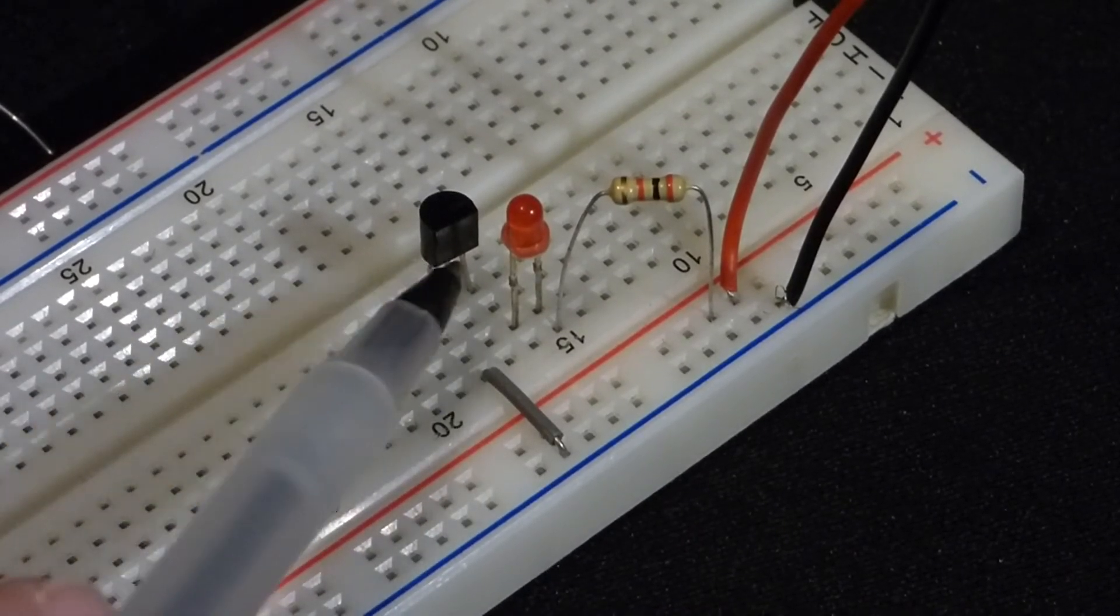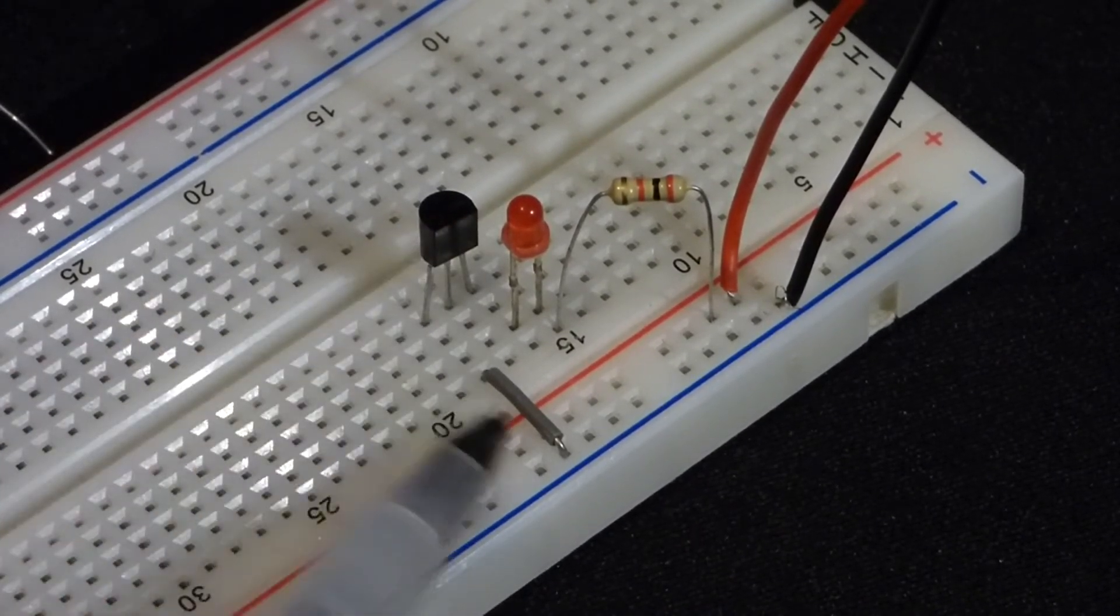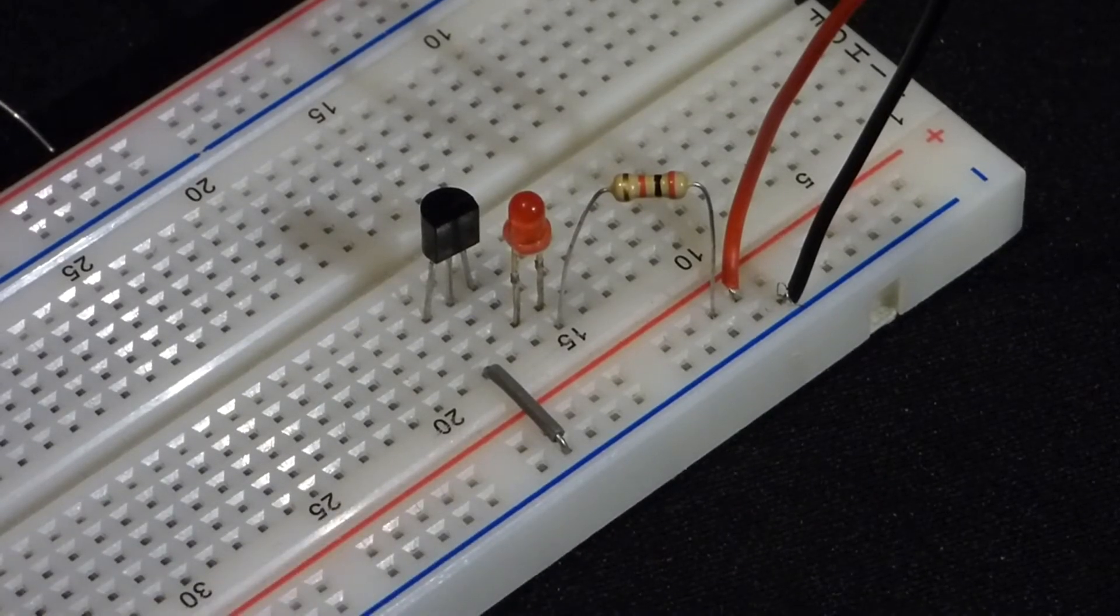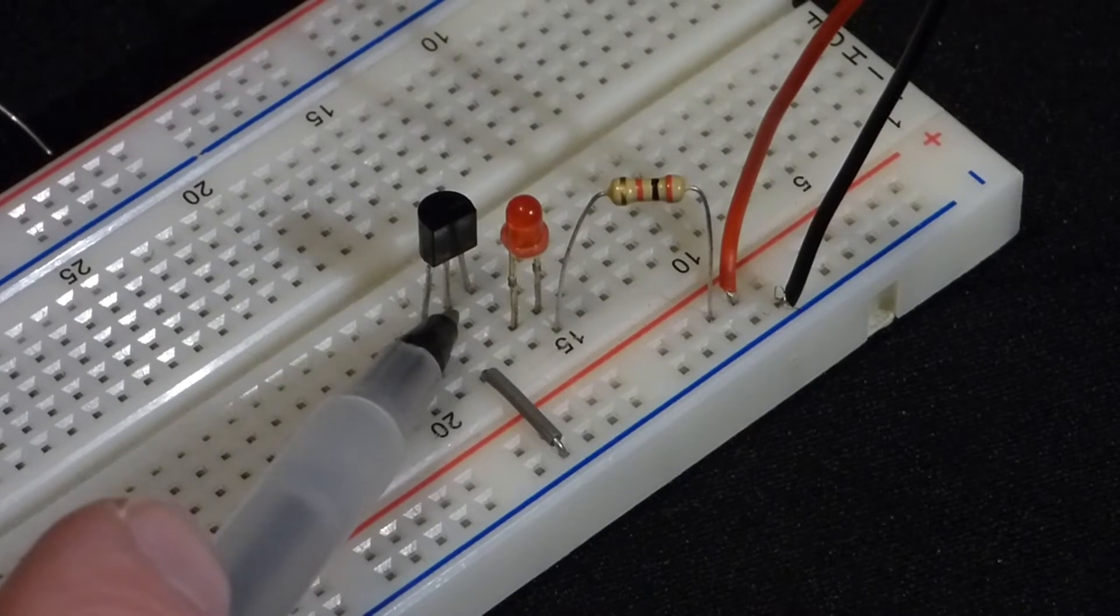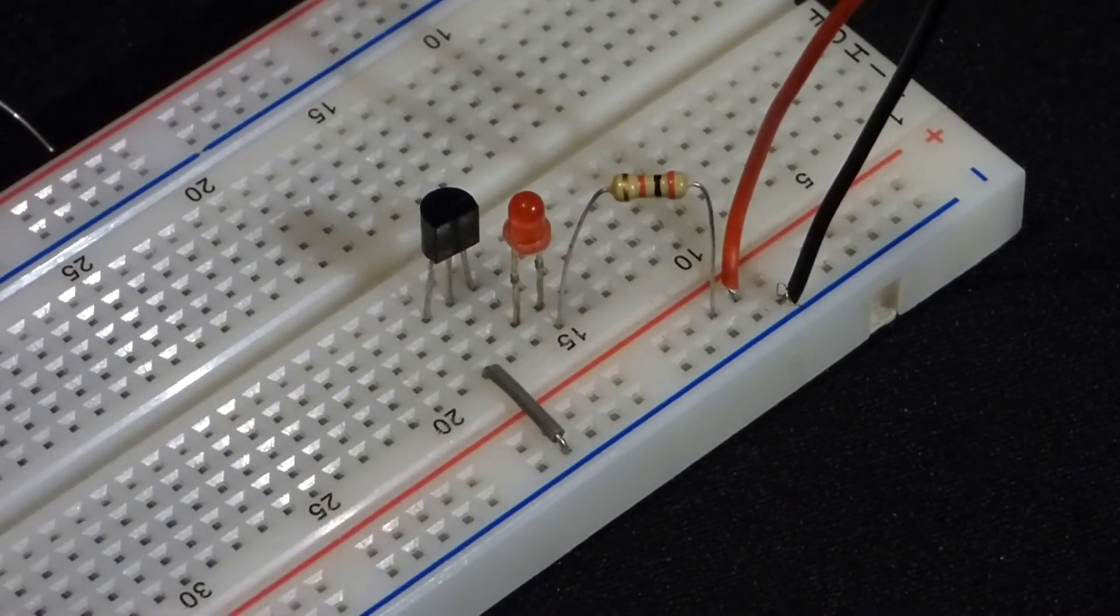So right now the transistor is off. It's not allowing current flow from collector to emitter, it's blocking the current. So what we need to do is get a positive voltage to the base, and we're going to do that by me touching a couple of wires.